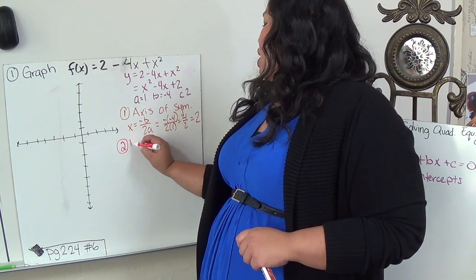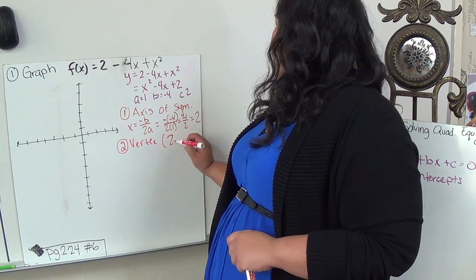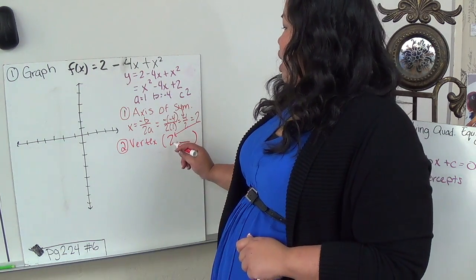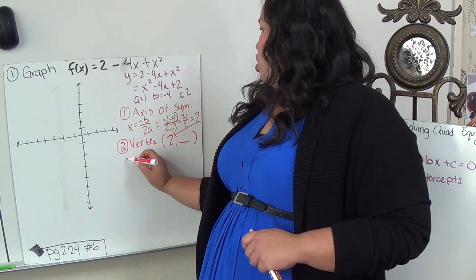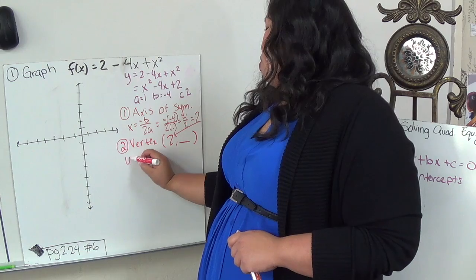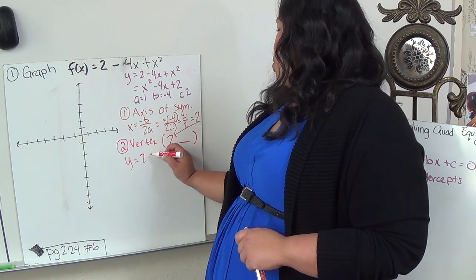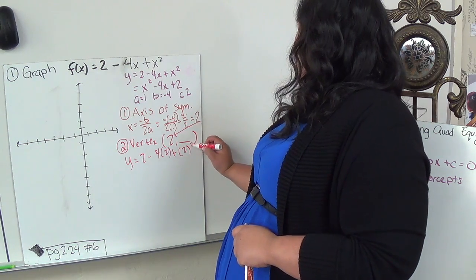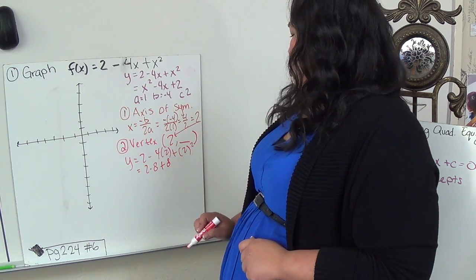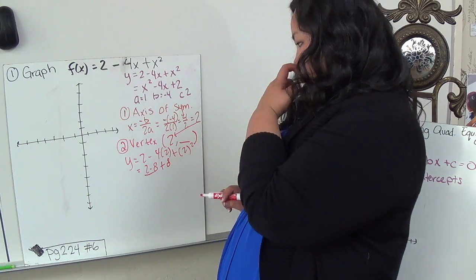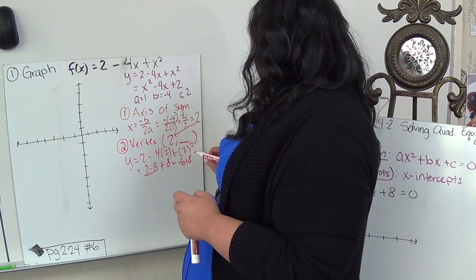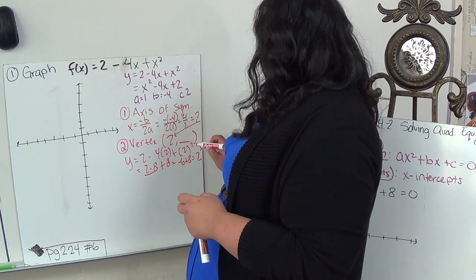And when we're doing our next step, which is the vertex, this actually then becomes the x-axis and we just need to find the y. So I'm going to plug this in to find my y. So either one actually will give you the right answer, but I'll just do it to the original. So y equals 2 minus 4 times 2 plus 2 squared. We do 2 minus 8 and 2 squared is plus 4. So 2 minus 8 equals negative 6 plus 4, which would give me negative 2.